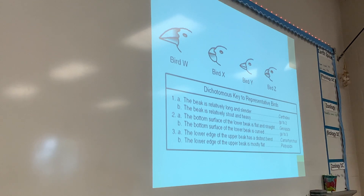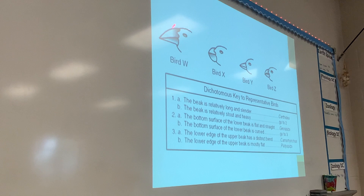Now looking at birds - if we pick a bird, we can identify it based on its beak. This is what Darwin did with his finches in the Galapagos Islands. Let's do bird W together since it's a bit harder. Is the beak relatively long and slender, or stout and heavy? It's stout and heavy, so we go to two. Is the bottom surface of the lower beak flat and straight? Yes - so this is a Geospiza. That's its genus name.